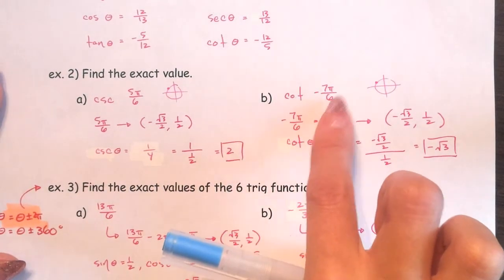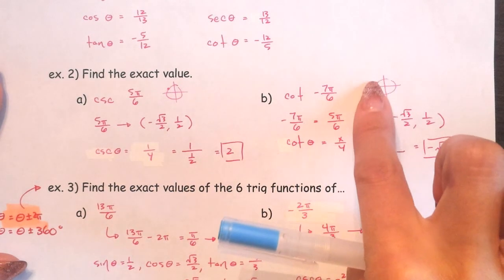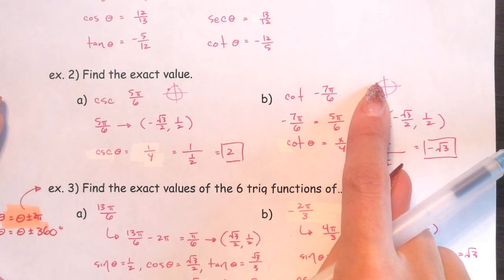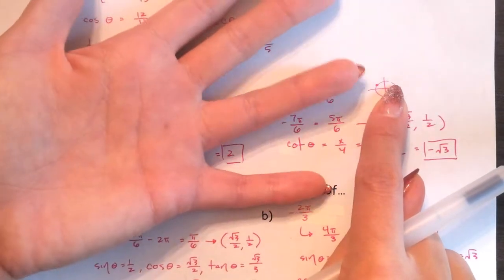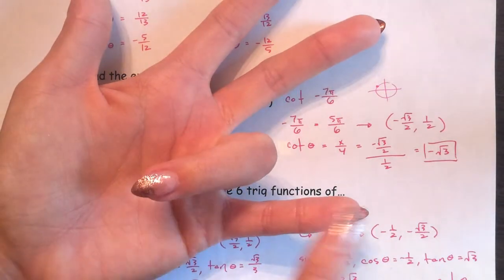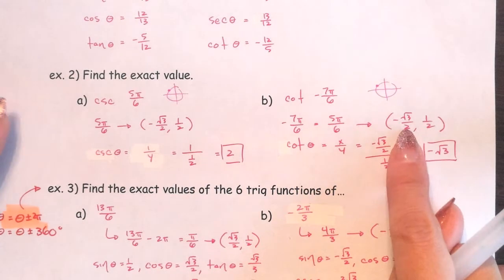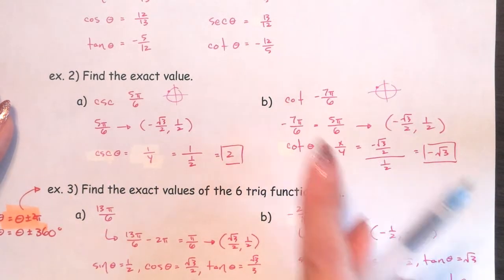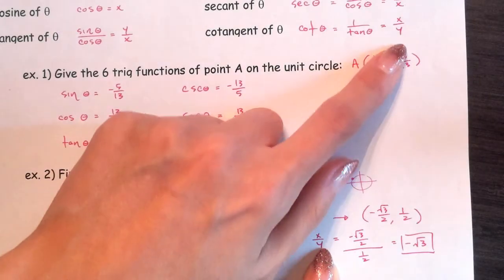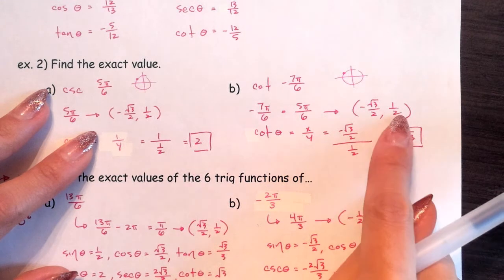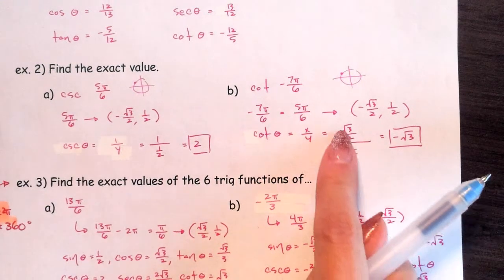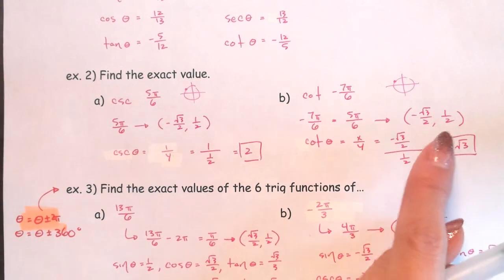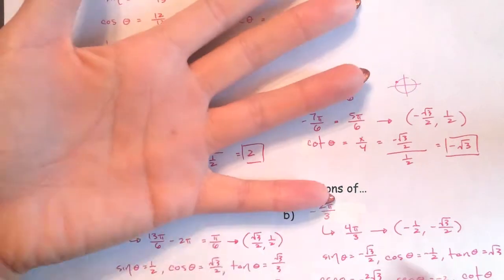Cotangent of -7π/6. Where's -7π/6? The negative means it goes the other way, but it ends up in the same spot as 7π/6 — which is in quadrant 3, symmetric to 30 degrees. My 30-degree reference gives root 3 over 2, comma 1 over 2. Quadrant 3 means both negative, so negative root 3 over 2, comma negative 1 over 2. Cotangent is x over y — the 2s divide away — giving negative root 3. Not using a calculator, not even a unit circle.